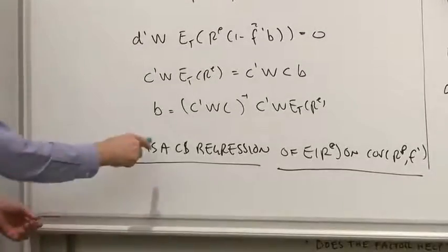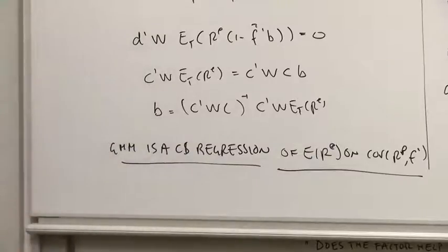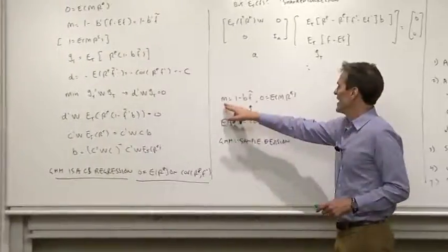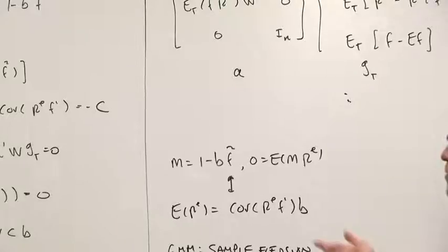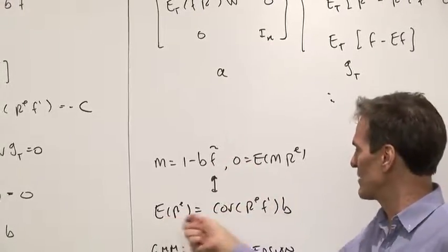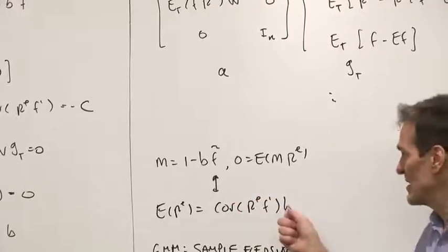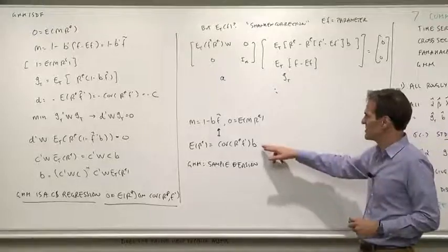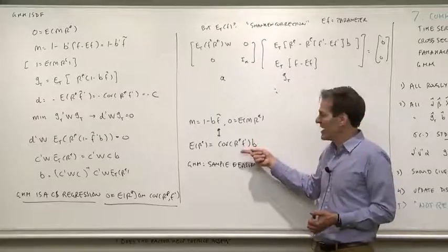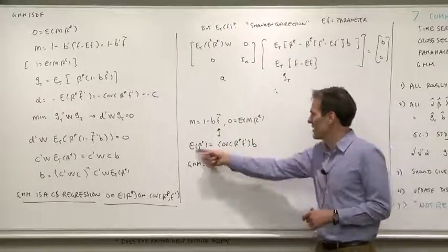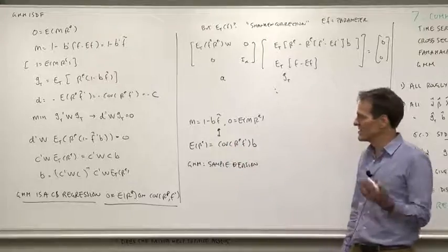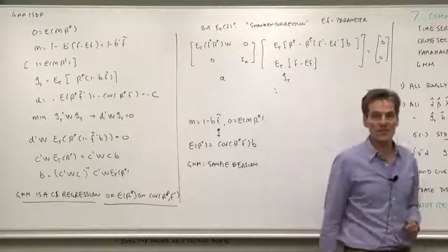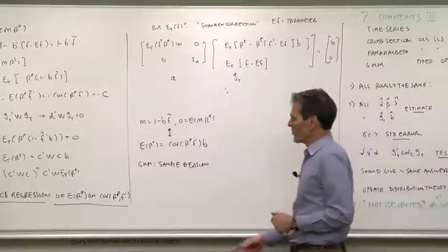Well, that makes abundant sense. Just think about the model. m is 1 minus bf, 0 equals E of mr. We've seen over and over again how that can be written as expected return is covariance of return times this b, the unknown parameter b, which takes the place of the lambda in the standard formulation. So perfectly natural. If you saw this and were told, go find an estimate of b, you'd say, well, why don't we run the n expected returns on the n covariances as an OLS or GLS cross-sectional regression, and that's how we'll estimate b. That is exactly what GMM tells you to do.